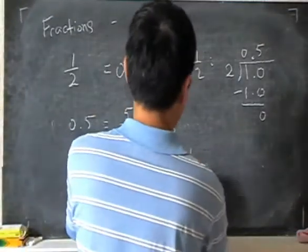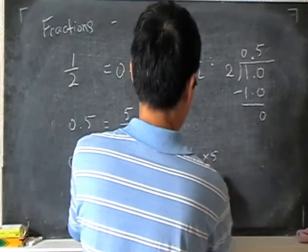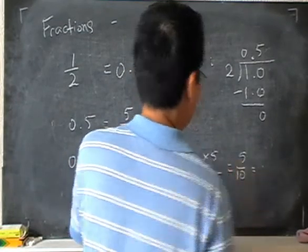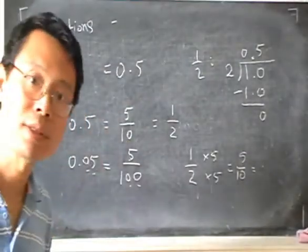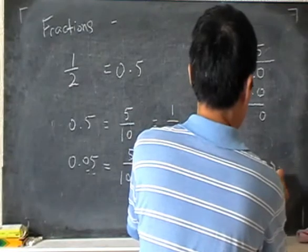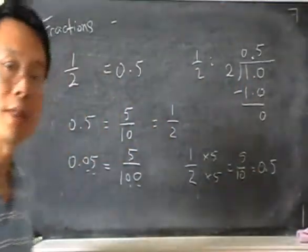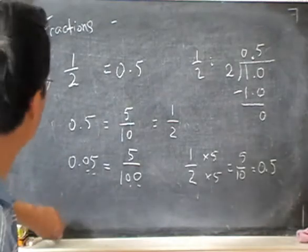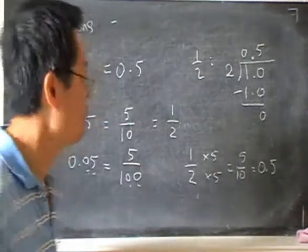If I do half, I can multiply by 5 here and here. And I'll get 5 by 10. And 5 over 10 can be written directly as a decimal. And that's how we can do it. So these are just simple cases of converting between fractions.